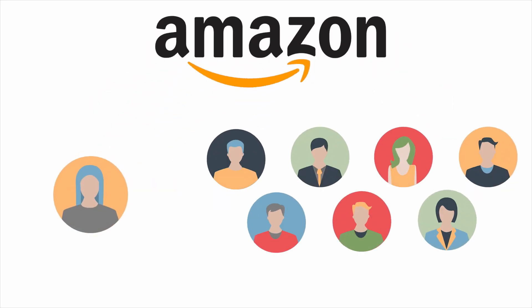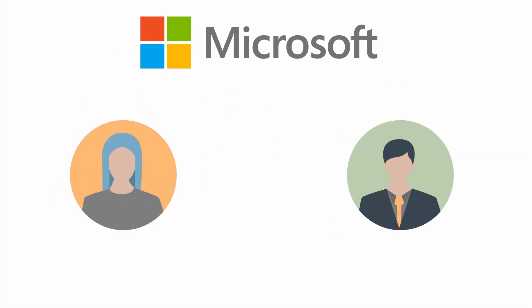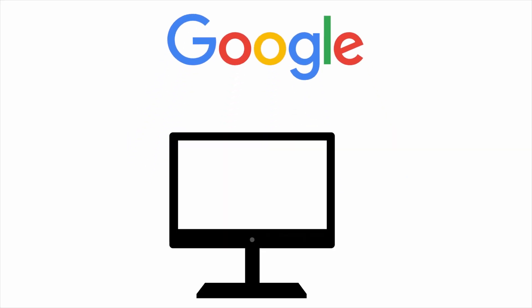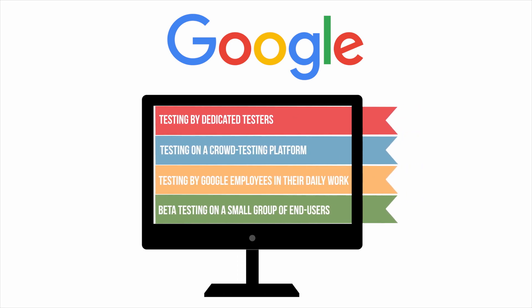Here are some examples of how world-famous software giants have organized their testing process. Amazon's tester-to-developer ratio is roughly one test engineer to seven developers. Microsoft employs a one-to-one or at least two-to-three tester-to-developer ratio. As for Google, the company has multi-testing stages: testing by dedicated testers, testing on a crowd testing platform, testing by Google employees in their daily work, and beta testing on a small group of end users.